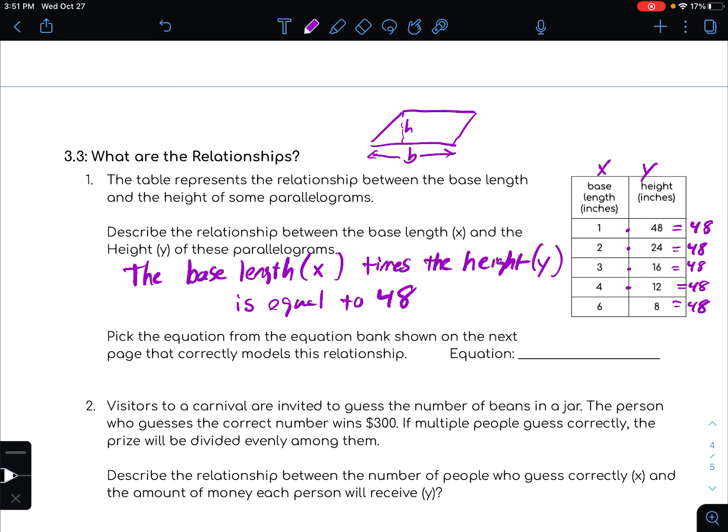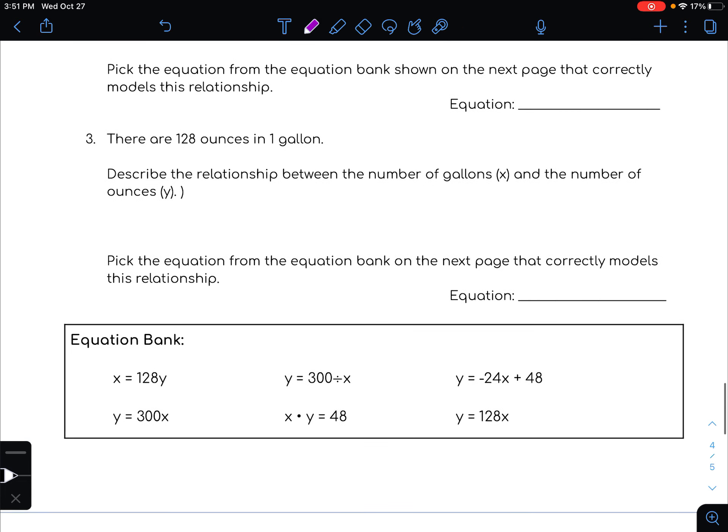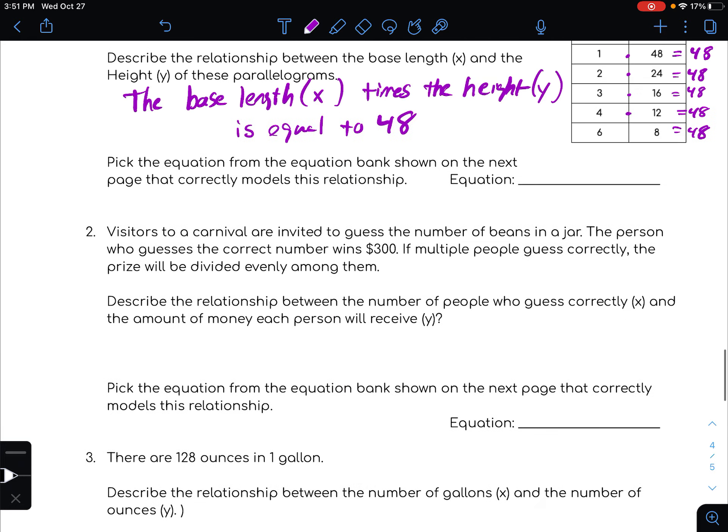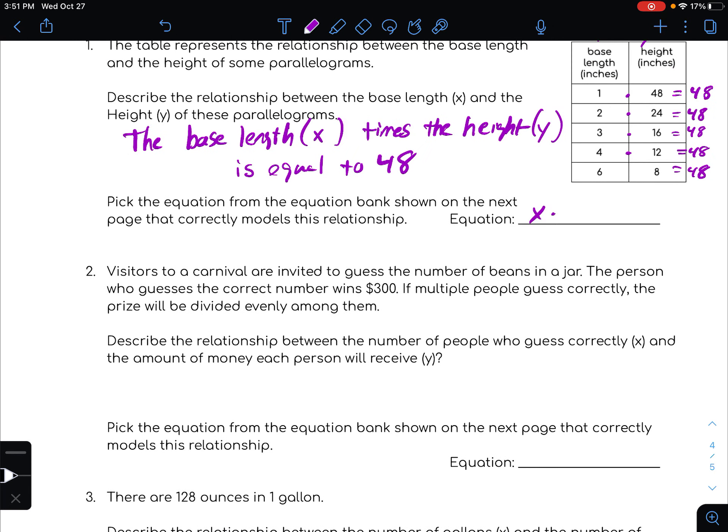All right, so let's see if we can find the equation that matches up with that. So it should be something like x times y equals 48, right? So there we go, that's our equation right there, x times y equals 48.